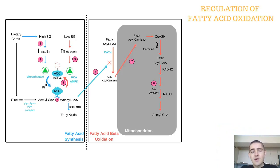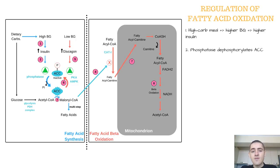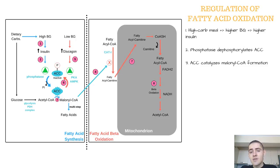After consuming a high carbohydrate meal, blood glucose levels increase and insulin is released. Then phosphatase dephosphorylates Acetyl-CoA Carboxylase, or ACC, thereby activating it. Acetyl-CoA Carboxylase then catalyzes the production of Malonyl-CoA, which is the first intermediate in the synthesis of fatty acids.